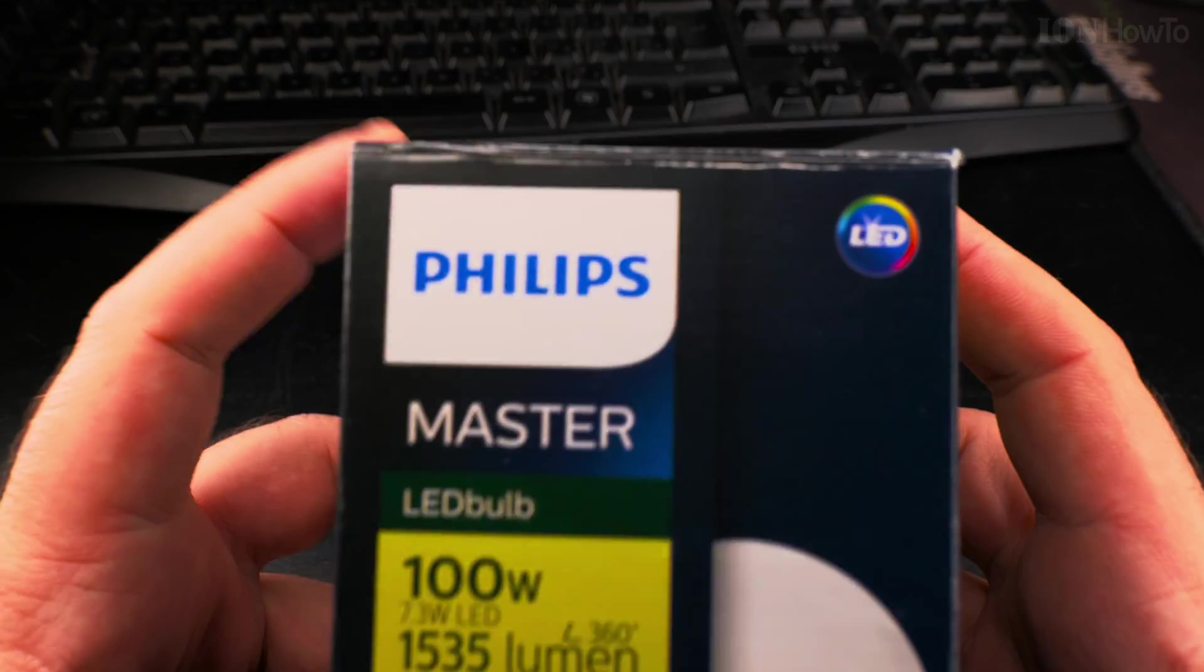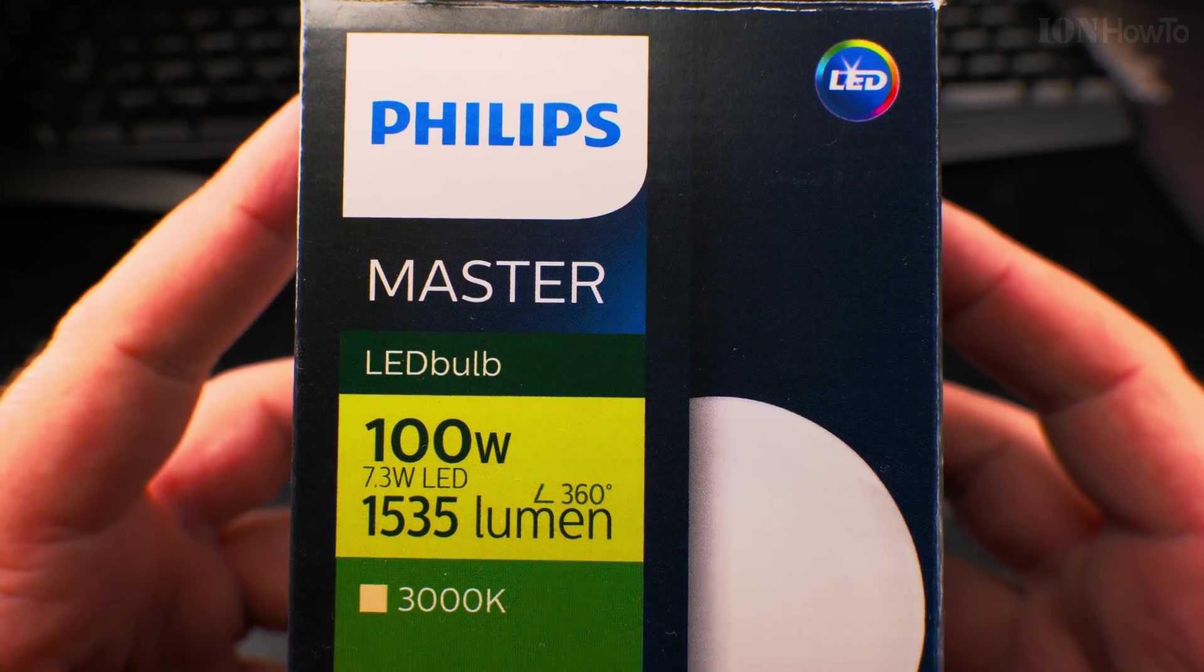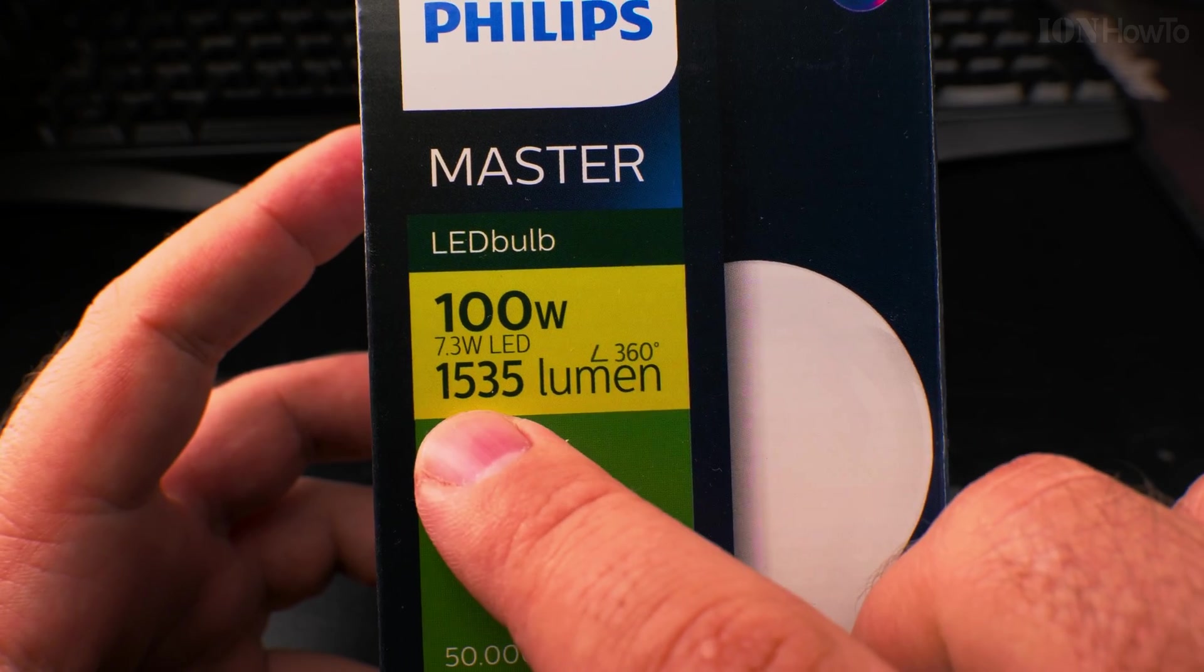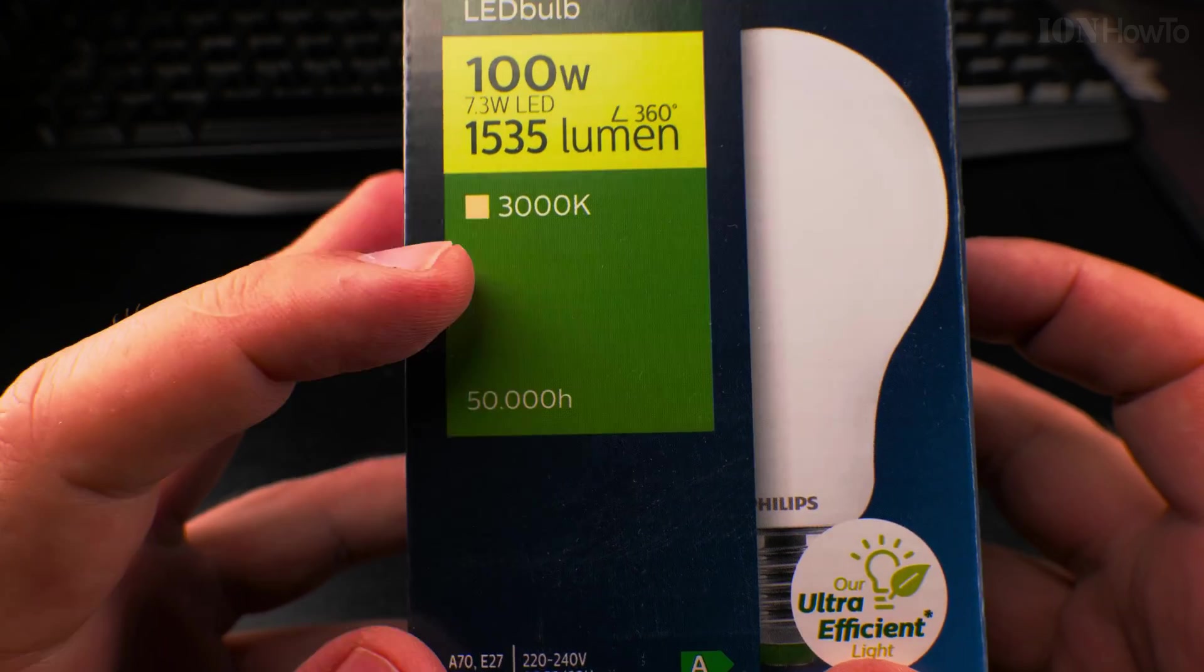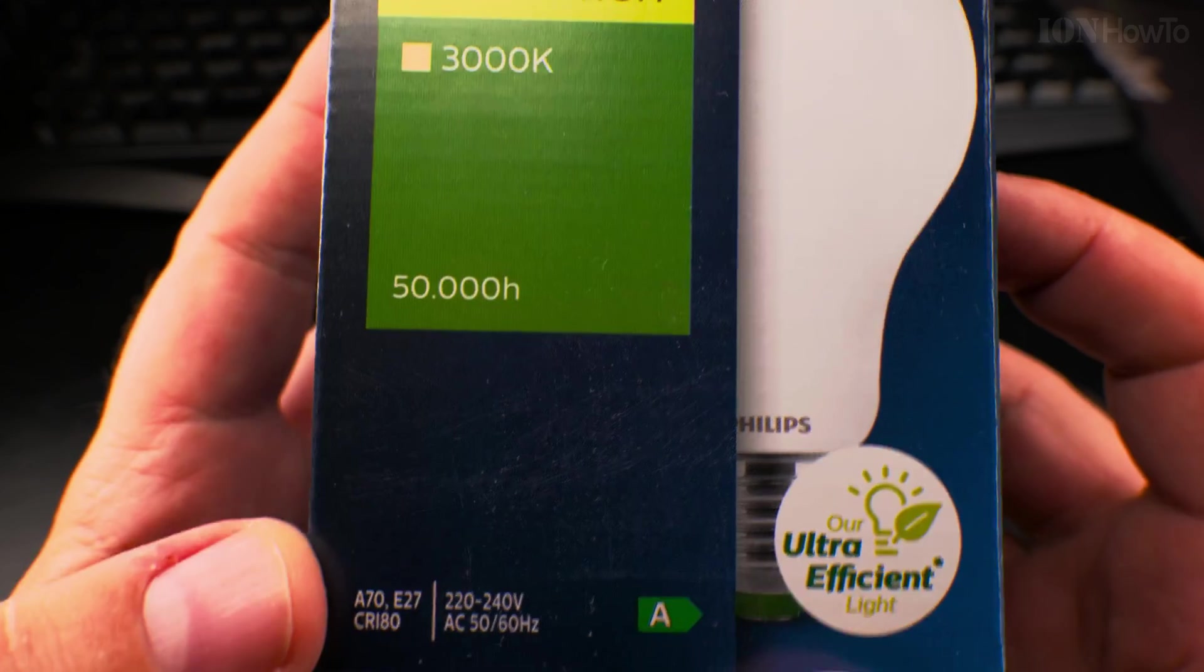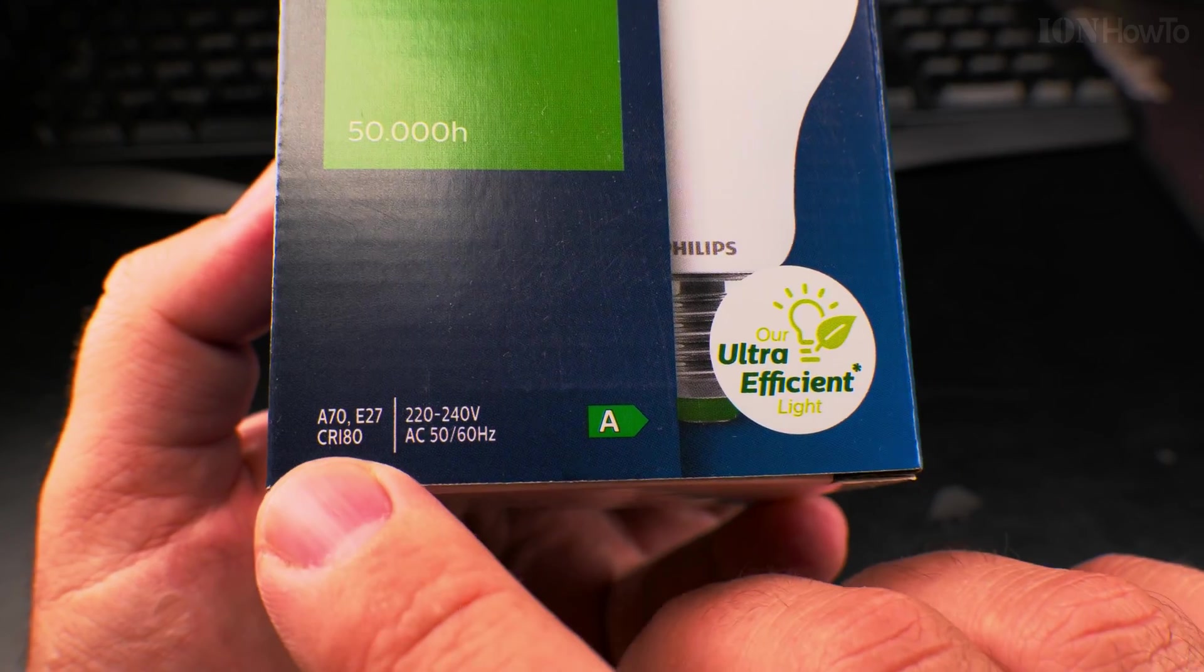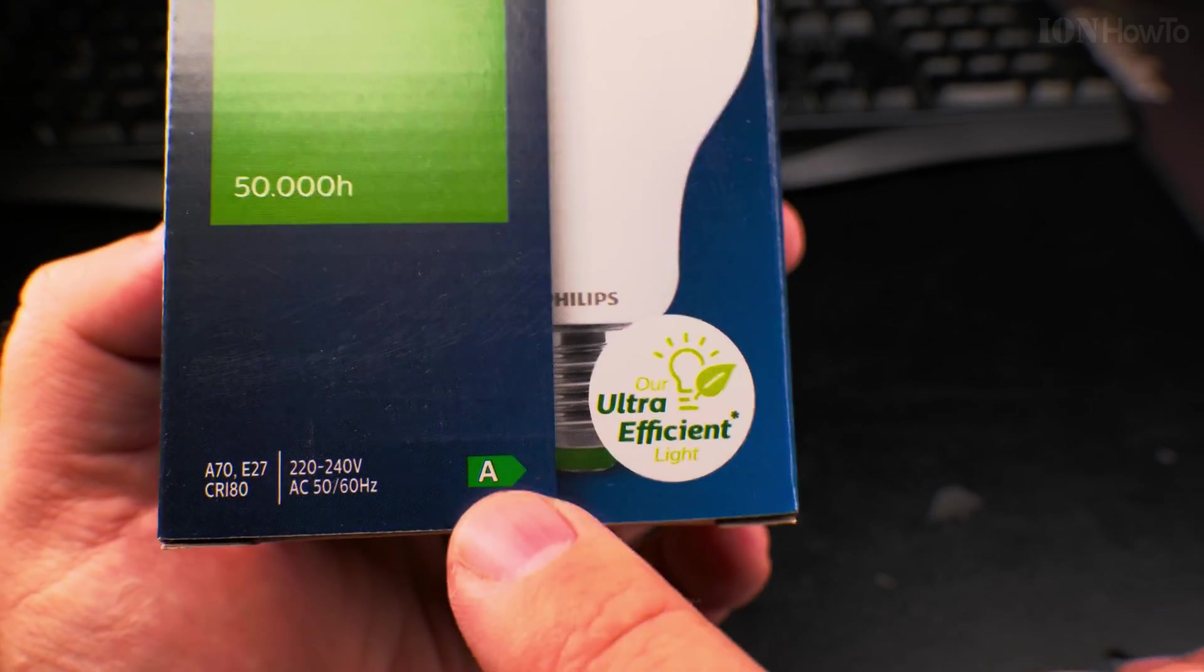This is much more efficient than Eye Comfort. The number of hours it works looks much better. It's 3000K, the color temperature, and only 7.3 watts for 1535 lumens, 100 watts equivalent. This is really great, 7.3 watts for 100 watts equivalent, it's a miracle really. The CRI is 80, the color rendering index.